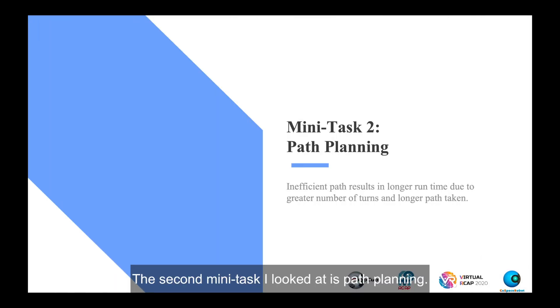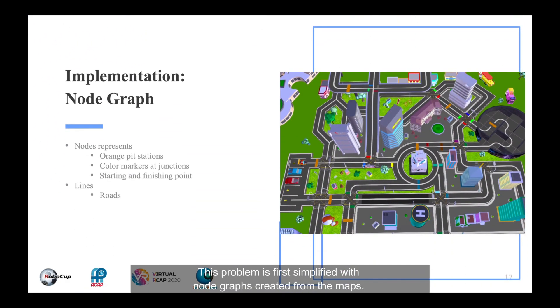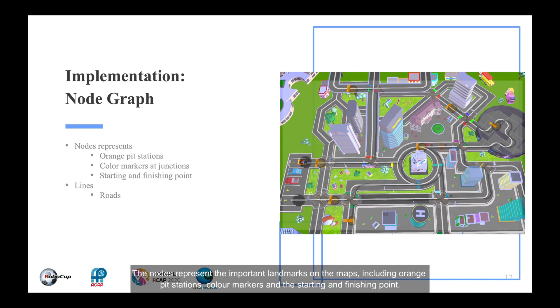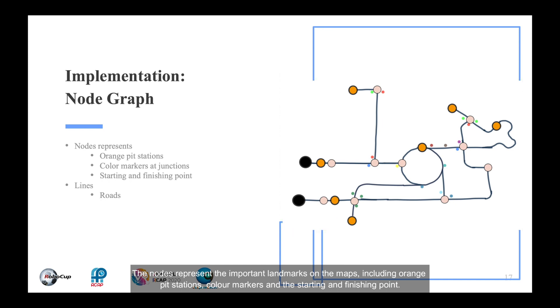The second mini-task I looked at is path planning. A well-planned path results in shorter run time due to smaller numbers of turns and shorter path taken. This problem is first simplified with node graphs created from maps. The nodes represent the important landmarks on the maps, including orange pit stations, colour markers and starting and finishing point. The lines represent the roads.